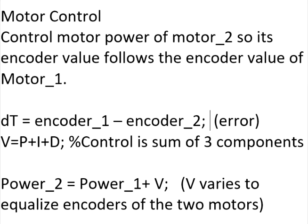We need to write equations to change motor behavior to minimize V. I try the following. The power in the slave motor, Motor 2, is equal to the power in the drive motor, Motor 1, plus the term V. V varies to minimize the error dT and match the encoder values. I will talk more about the components P, I, and D in the tuning section after these three trials.